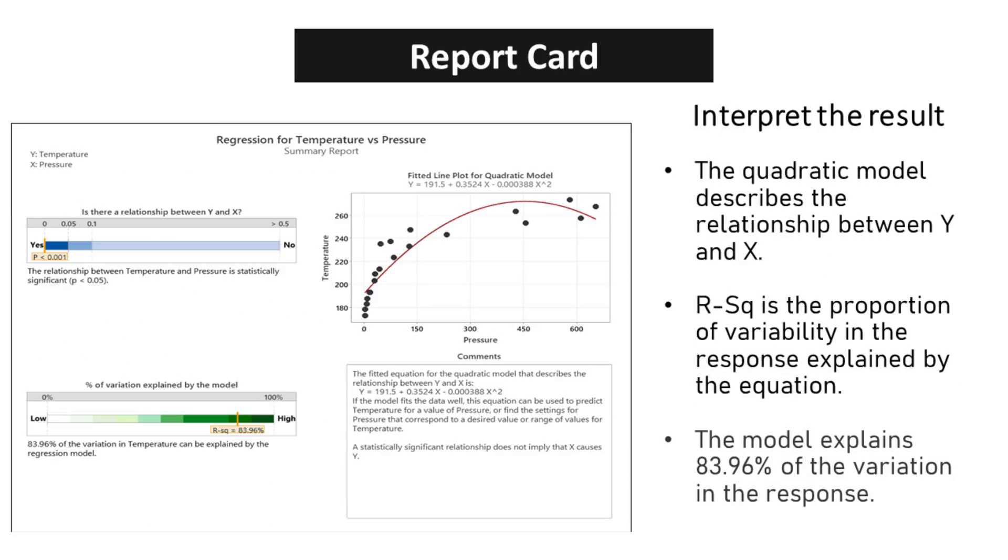The quadratic model is a powerful tool that helps us analyze and interpret the relationship between two variables. It provides us with valuable insights into the nature of this relationship and allows us to make informed decisions based on these insights.